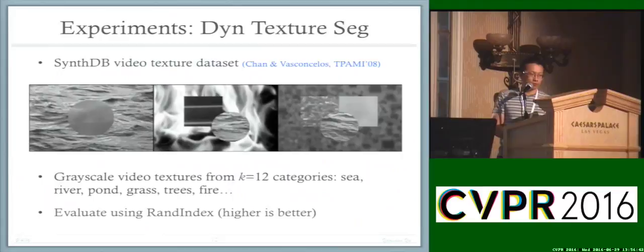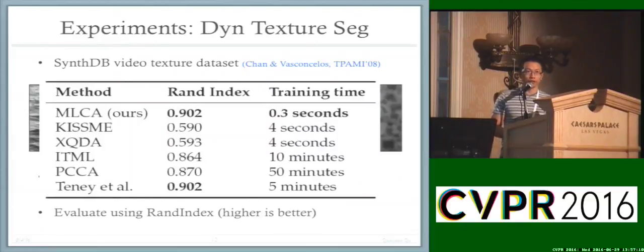The final experiment is on dynamic texture segmentation. This is a dataset with video textures—grayscale video textures with 12 different textures. In this case, the number of classes k equals 12. We evaluated the algorithms using the Rand index; basically, the higher the Rand index, the better. In this table, I'm showing a comparison with state-of-the-art algorithms for this problem. In particular, we compared with Taney et al., published last year at CVPR. We achieved similar accuracy but our algorithm is far more efficient.